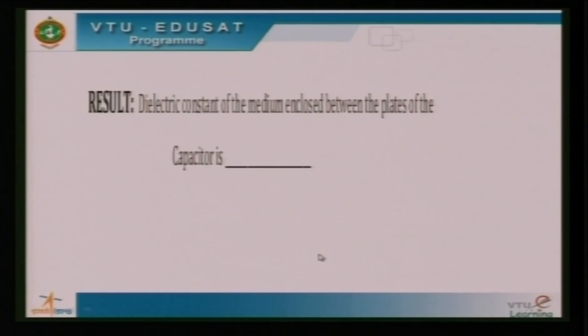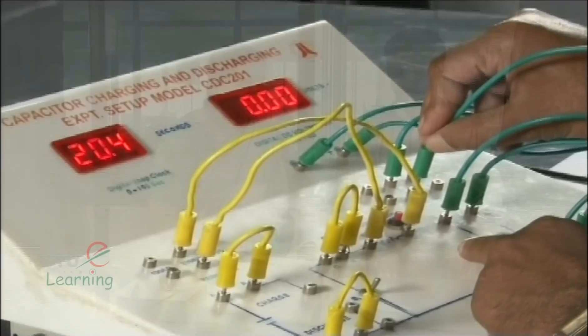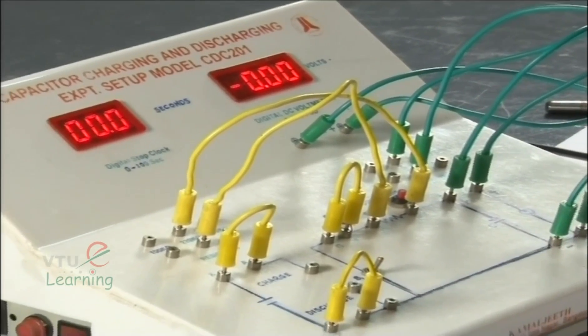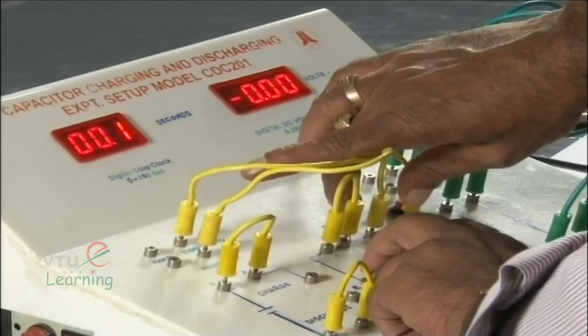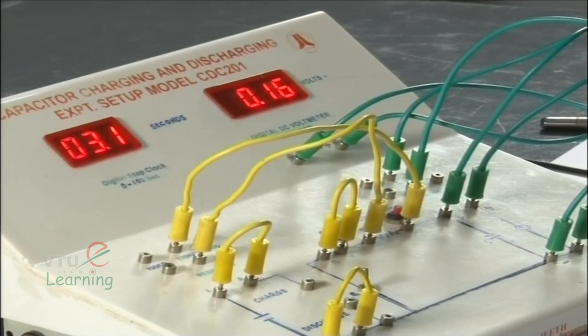This is how we determine the dielectric constant of the material enclosed between the plates of the capacitor. One could also perform the experiment using a different capacitor such as C2, repeating the same procedure all over again. The dielectric constant measurement helps us determine the capacitance value of a capacitor, which has practical applications in various sectors.